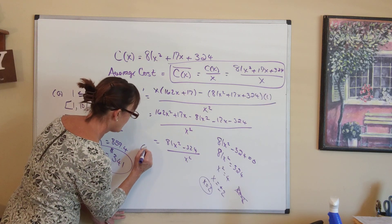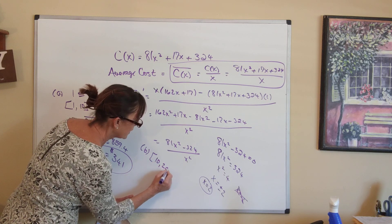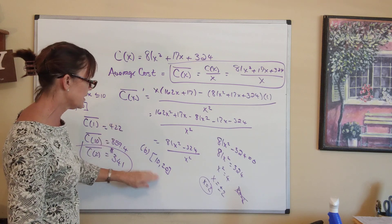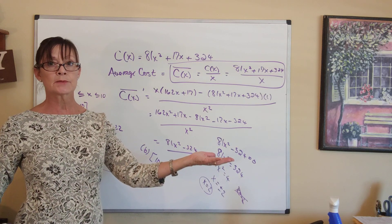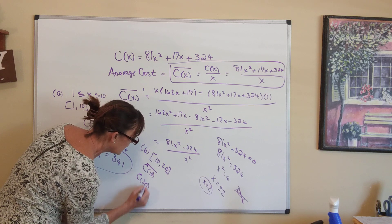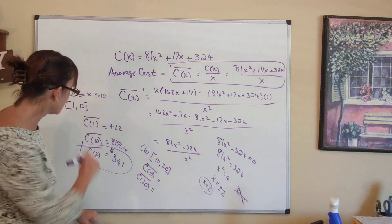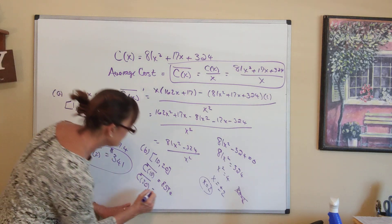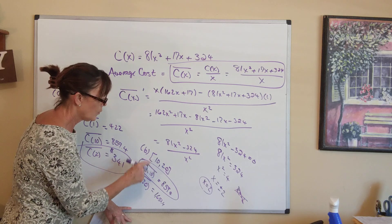For part B, the interval is [10, 20]. We use the same derivative and critical values. The critical value x = 2 is not on [10, 20], so there are no critical values on this interval. We only test the endpoints: C̄(10) = 859.4 and C̄(20) = 1,653.4. The lowest is 859.4, so the absolute minimum average cost on [10, 20] occurs when x = 10.